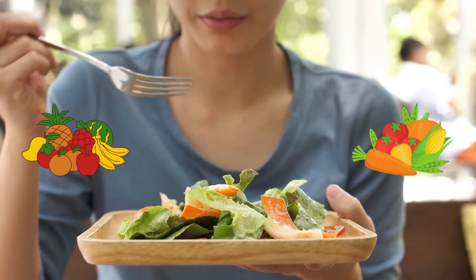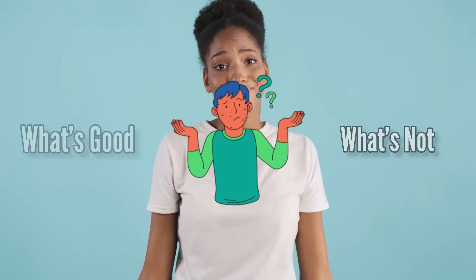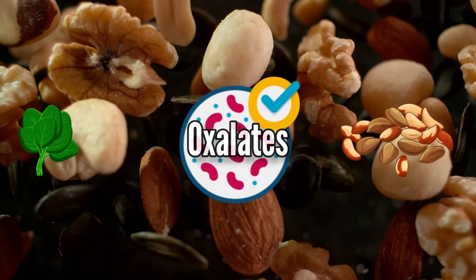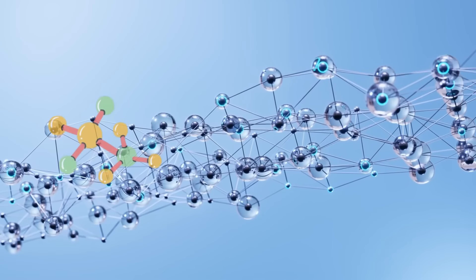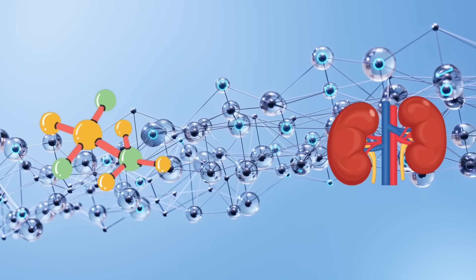Eating lots of fruits and veggies is really good for our kidneys, but sometimes it can be confusing what's good and what's not. Some foods, like spinach and nuts, have something called oxalates. Oxalates are natural compounds found in many plant-based foods. These compounds can stick together and form crystals in your kidneys if you have them too much.